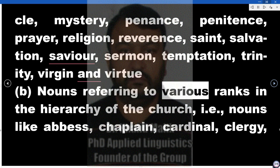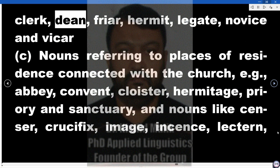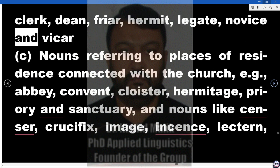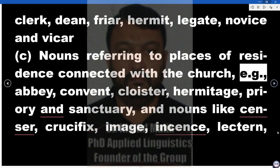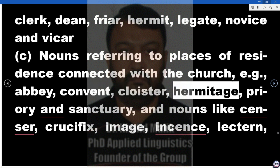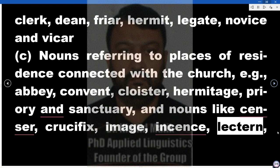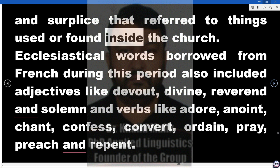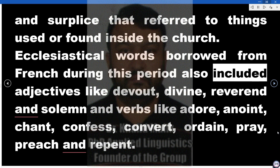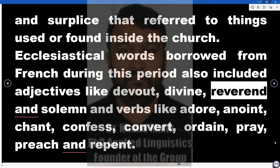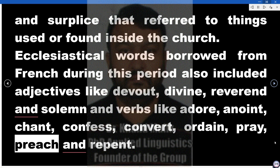Nouns referring to various ranks in the hierarchy of the church — abbess, chaplain, cardinal, clergy, clerk, dean, friar, hermit, legate, novice, and vicar. Nouns referring to places of residence connected with the church — abbey, convent, cloister, hermitage, priory, and sanctuary — and nouns like censer, crucifix, image, incense, lectern, and surplice that referred to things used or found inside the church. Ecclesiastical words borrowed from French also included adjectives like devout, divine, reverend, and solemn, and verbs like adore, anoint, chant, confess, convert, ordain, pray, preach, and repent.